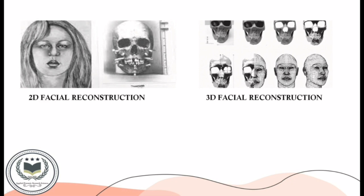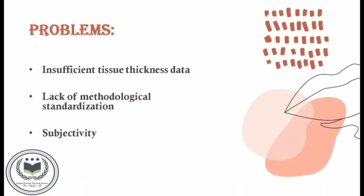Moving to the problems with facial reconstruction: the problems we might face are insufficient tissue thickness data, lack of methodological standardization, and subjectivity. Regarding insufficient tissue thickness data, the most pressing issue relates to the data used to average facial tissue thickness. The data available to forensic artists are still very limited in ranges of age, sex, and body build.